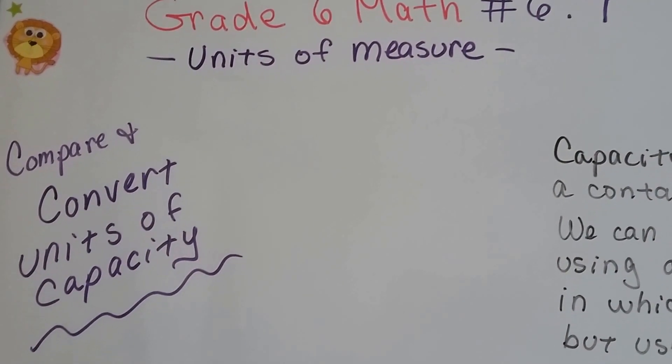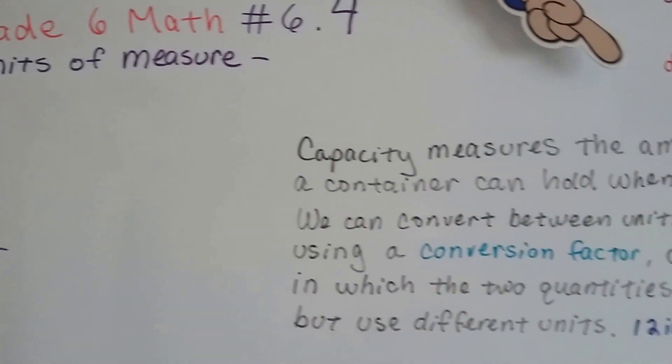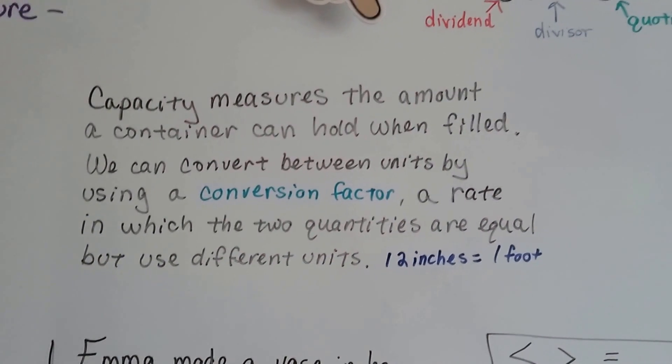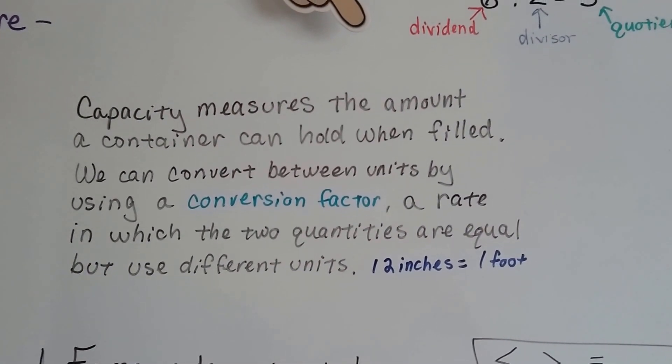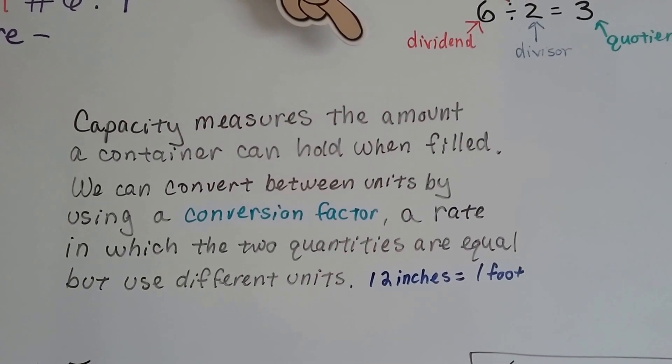Grade 6 math number 6.4: Compare and convert units of capacity. We just did units of length. Capacity measures the amount a container can hold when it's filled. We can convert between units by using a conversion factor. That's a rate in which the two quantities are equal but use different units, like 12 inches as a foot.